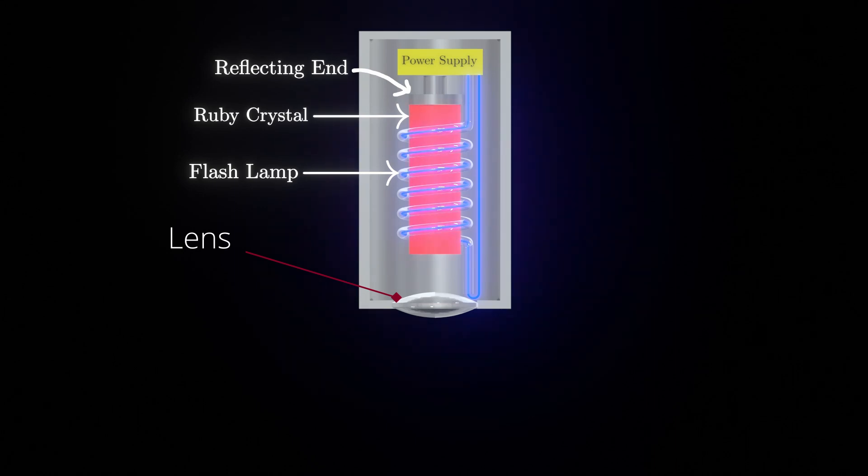The intense radiation from the lamp excites the fluorescent impurity atoms - chromium atoms. As I told you earlier, our ruby crystal is doped with 0.05% chromium.